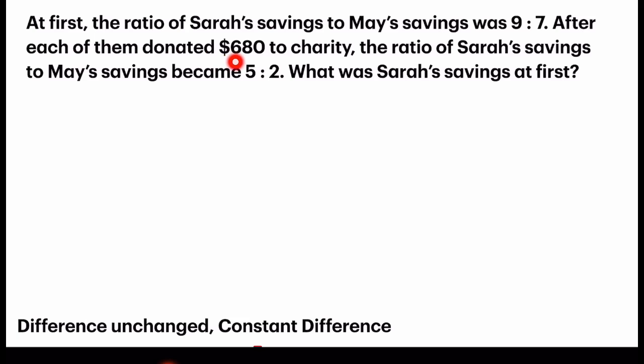After each of them donated $680 to charity — this is the key phrase that hints to us that we are going to use the difference unchanged concept. Because if each of them donates an equal amount of money, Sarah would still have two units more money than May. But after donating, the ratio of Sarah's savings to May's savings became 5 to 2.